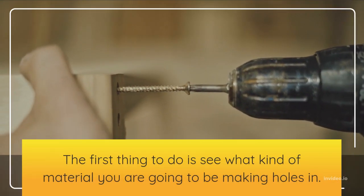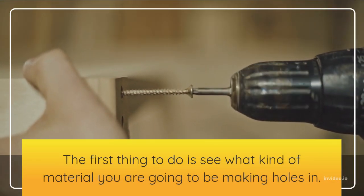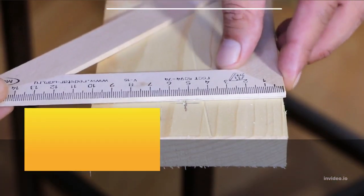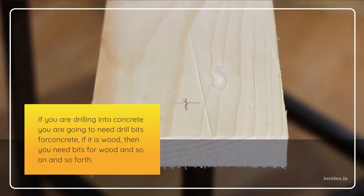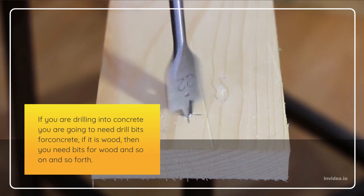The first thing to do is see what kind of material you are going to be making holes in. If you are drilling into concrete, you are going to need drill bits for concrete. If it is wood, then you need bits for wood, and so on and so forth.